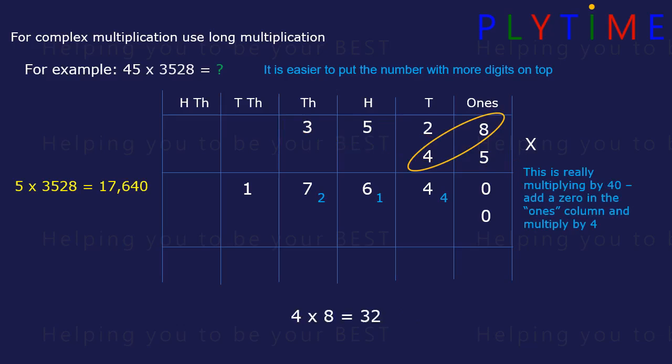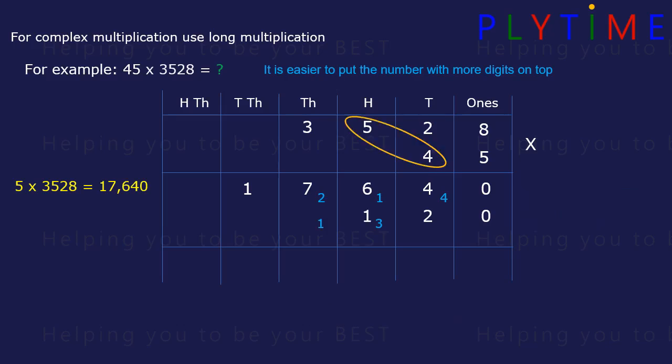Then just multiply 4 times 8 is 32. We write the two and carry three forward. 4 times 2 is 8, plus the three is 11. Write the one, carry one forward. 4 times 5 is 20, plus the one we've carried forward is 21. Write the one and carry two forward. 4 times 3 is 12, plus the two carried forward is 14.